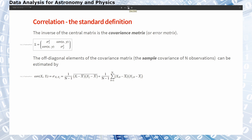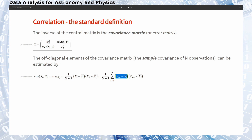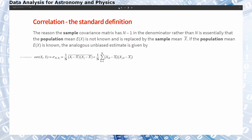The inverse of this central matrix is the covariance matrix, sometimes also called the error matrix — we call it sigma. The elements on the diagonal are the variances, and the off-diagonal elements of the covariance matrix can be estimated by the covariance formula, where we sum up the products of all the x and y deviations. We use the Bessel-corrected value for the sample covariance, dividing by n-1, whereas for population covariance we use 1/n.